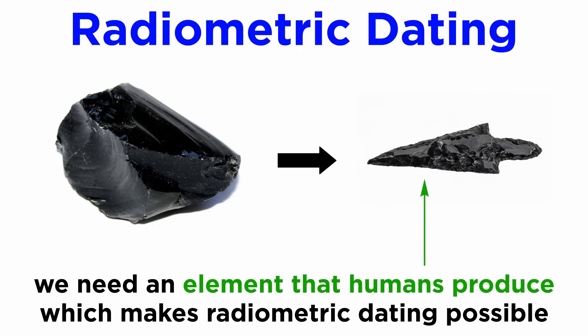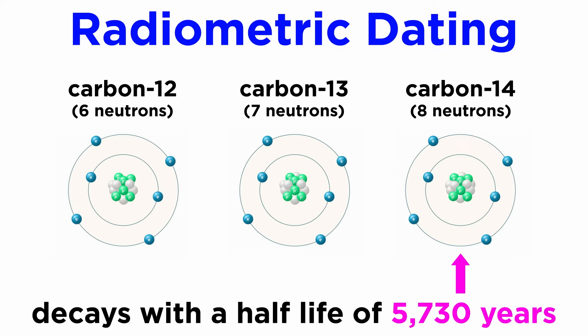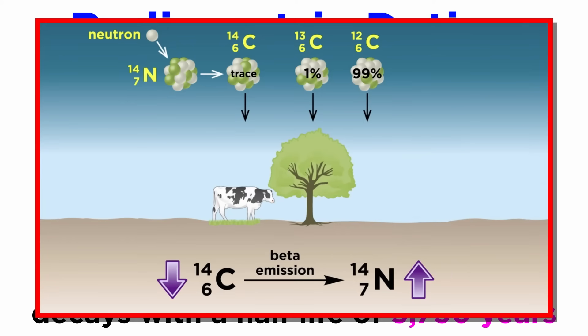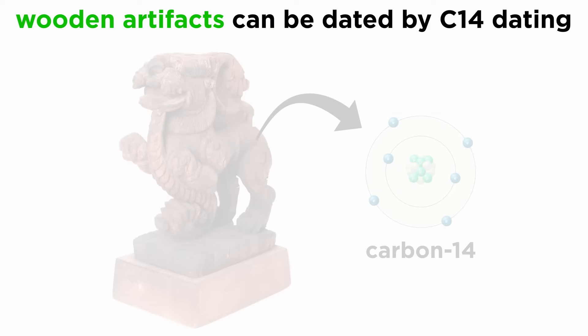So to use radiometric dating, archaeologists would need an element that humans produce which decays in such a way that radiometric dating is applicable. Fortunately, nature has given us this element. Carbon is the element of life, and humans create and utilize it in a multitude of ways. An isotope of carbon, carbon-14, exhibits radioactive decay that makes it applicable for radiometric dating. In the general chemistry series, we go over the details of this type of dating, so let's discuss its application. Several artifact types have carbon components to them. Unfortunately, most carbon materials decompose after a few years.